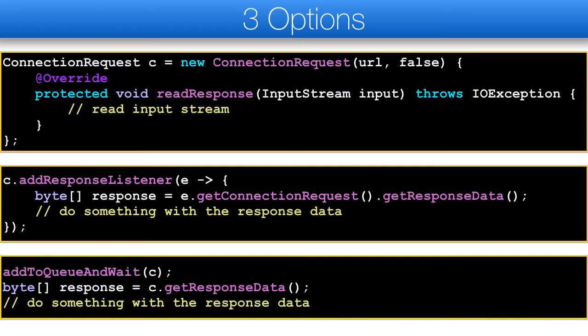The second option uses a response listener to get the result from the ConnectionRequest. Notice that a response listener occurs on the event dispatch thread, so this will slow down execution slightly, but you will be able to make changes to the UI directly so the code will be simpler. The same is true about the last and arguably simplest option. When you use addToQueueAndWait instead of addToQueue, the current thread is blocked using invoke and block, and we can then extract the data. This is pretty convenient for simple requests.